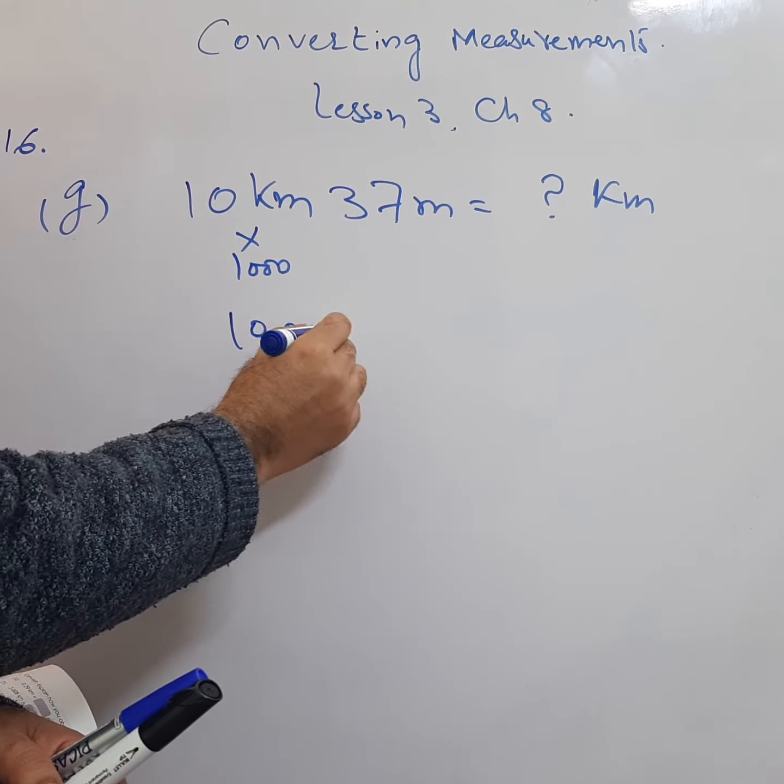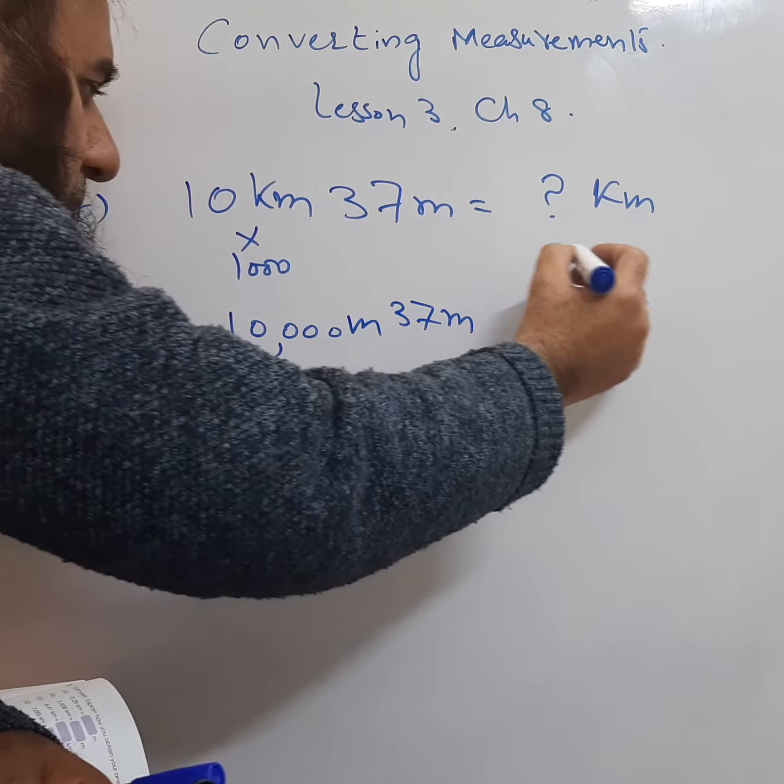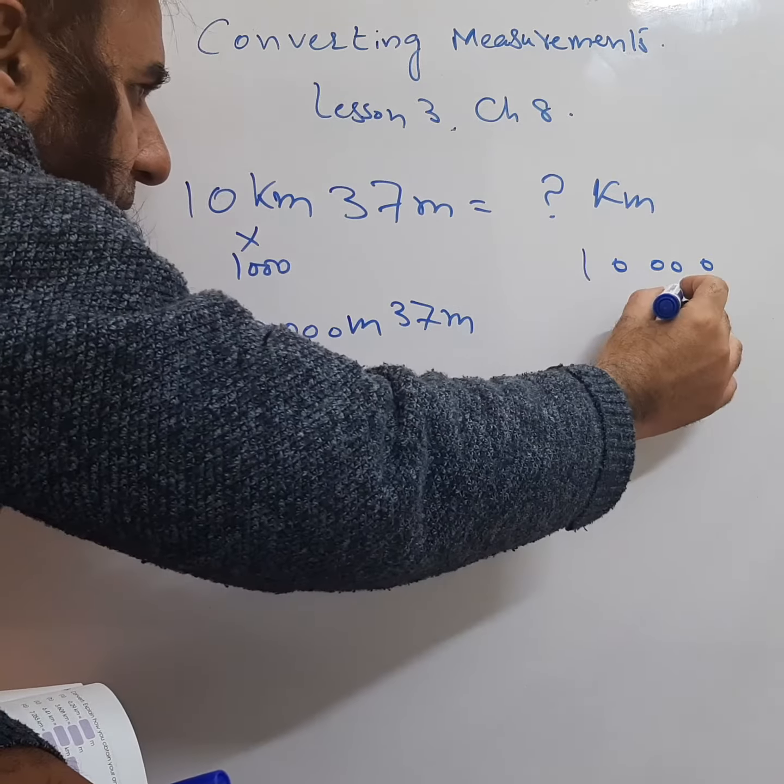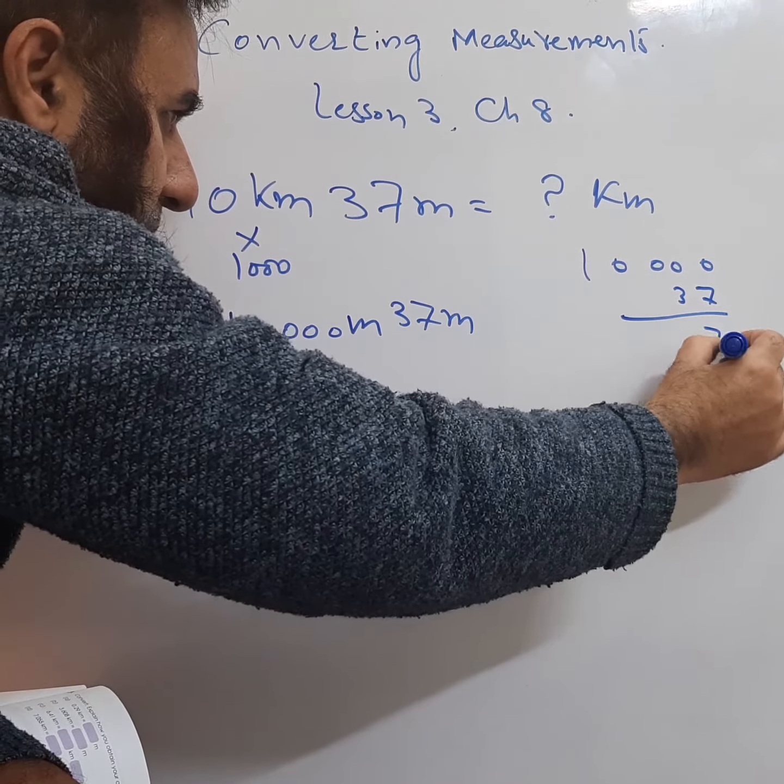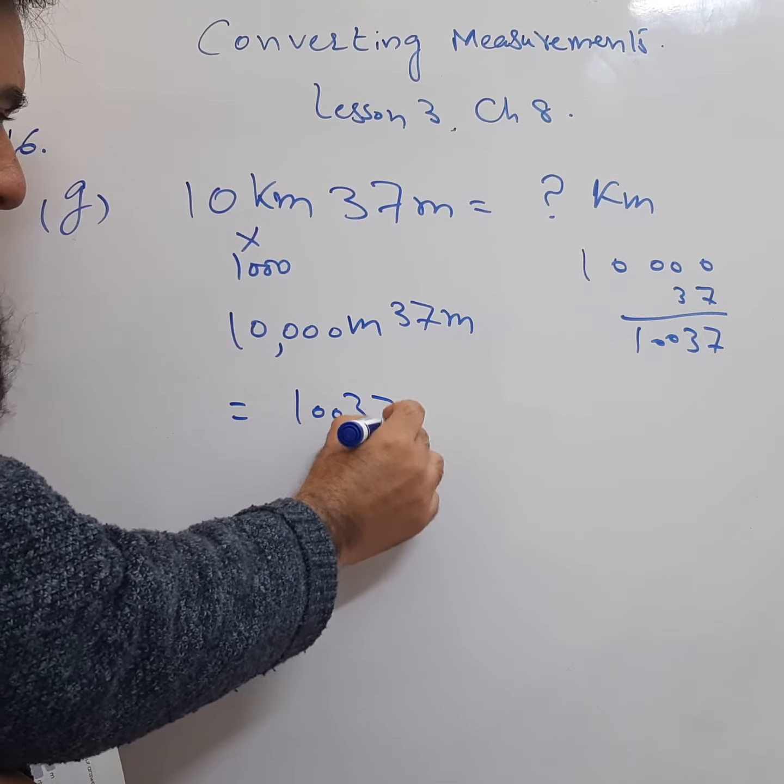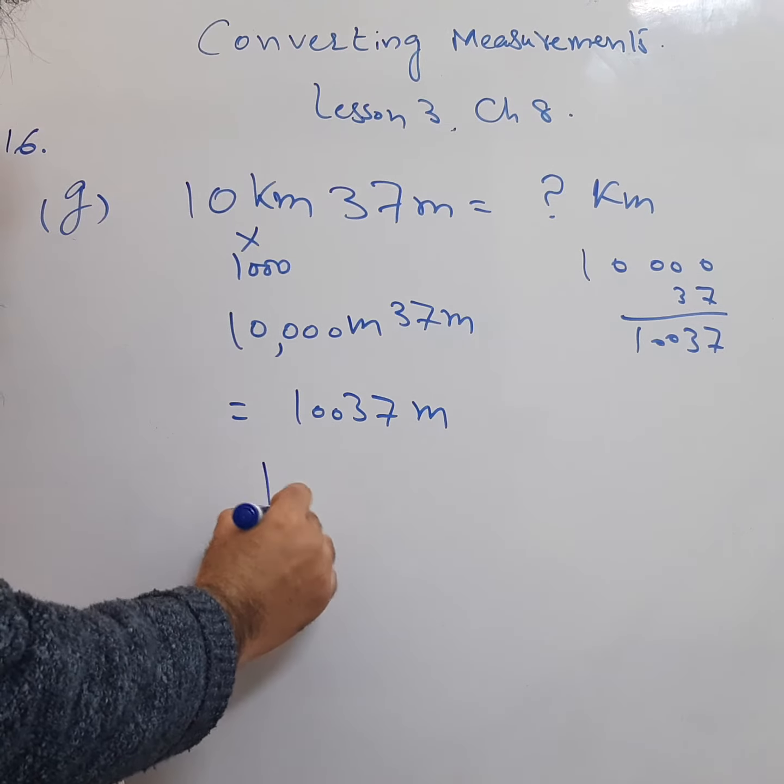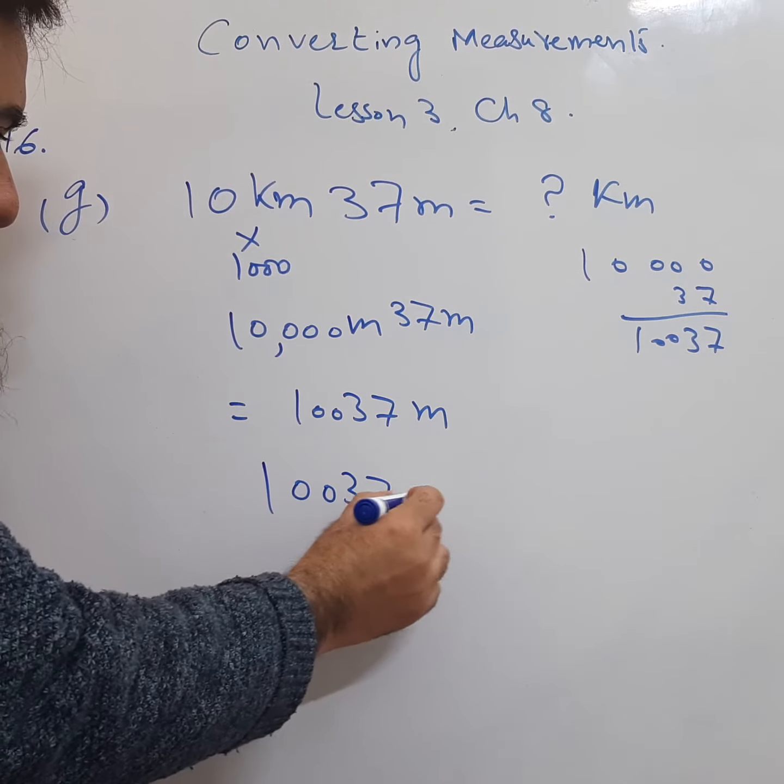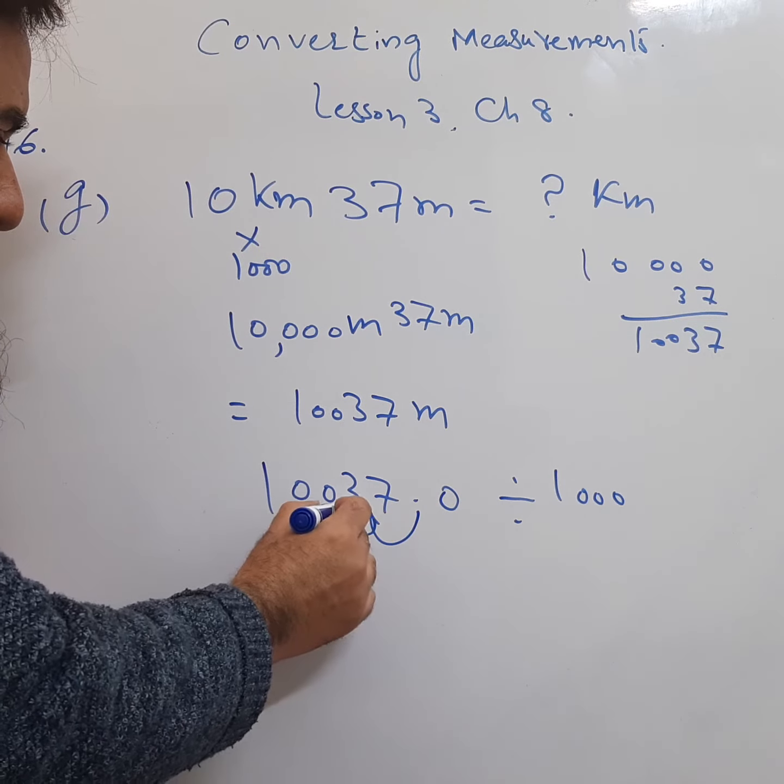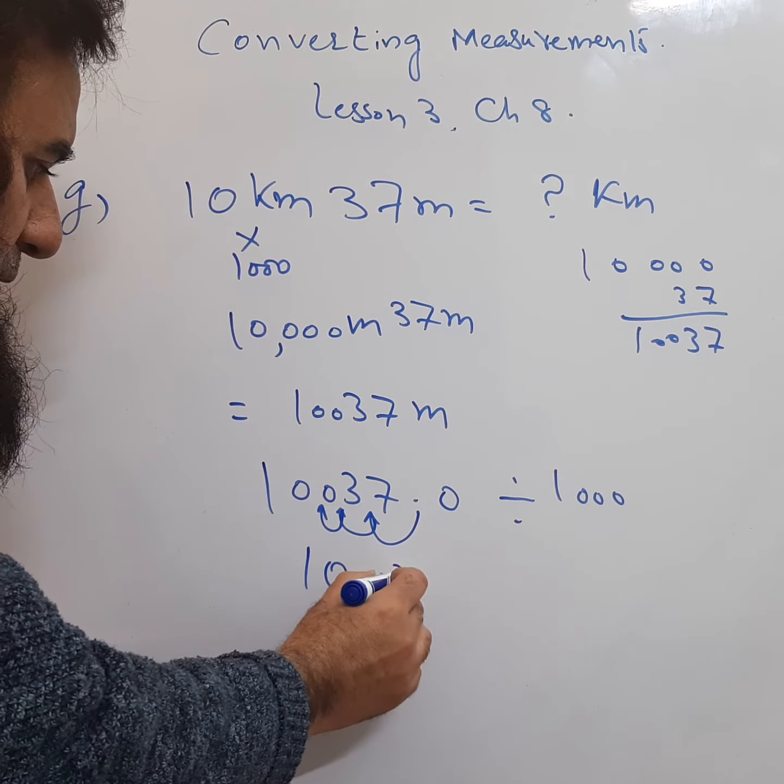10,000 meters and 37 meters, so it becomes 10,037 meters. Now we just need to convert it into kilometers. We will write it like this: 10,037.0 and divide it with 1000. Shift the decimal three times - 1, 2, 3 - it becomes 10.037 kilometers.